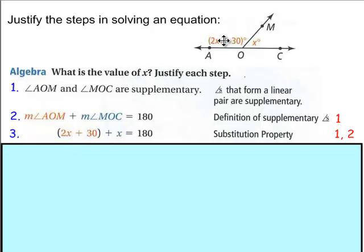What's happened here? I placed this value, 2x plus 30, in place of the measure of angle AOM, and the measure, the value of x in place of the measure of angle MOC. So we're substituting that in there. Substituting that in there from the information given, well really, my little note here, I should just say it's from step two.